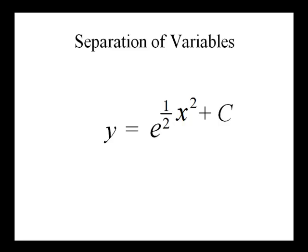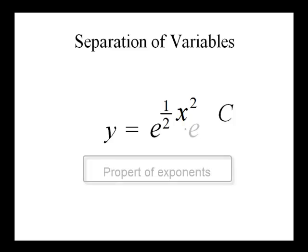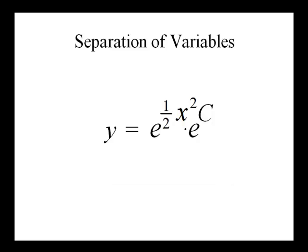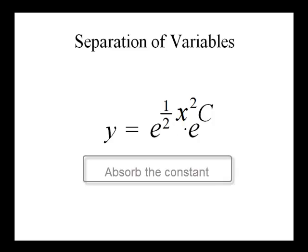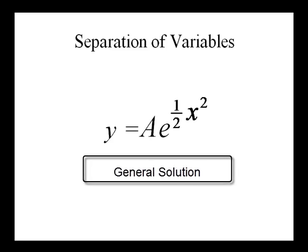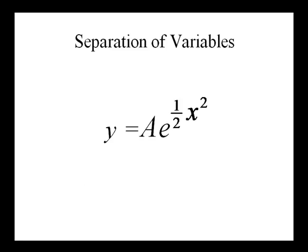We could leave it like that and solve for c. But using a property of exponents, we can rewrite this as e to the one-half x squared times e to the c. Now just like c is a constant, e to the c is a constant, so we absorb it into another constant — for instance, calling e to the c simply 'a'. Our general solution is y equals a times e to the one-half x squared, treating it as a multiplicative constant.